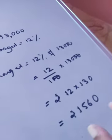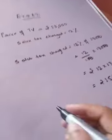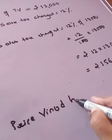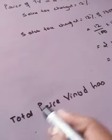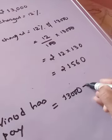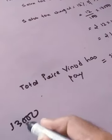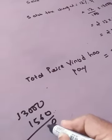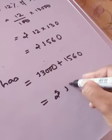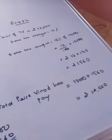So 1,560 is the tax that Vinod has to pay against this price. Now the total price Vinod has to pay equals 13,000 plus 1,560. Adding it up, it would be 14,560. So this is the solution of question number 8. I hope you have understood.